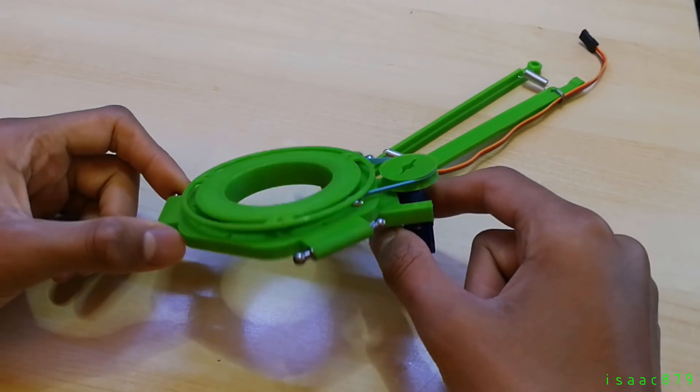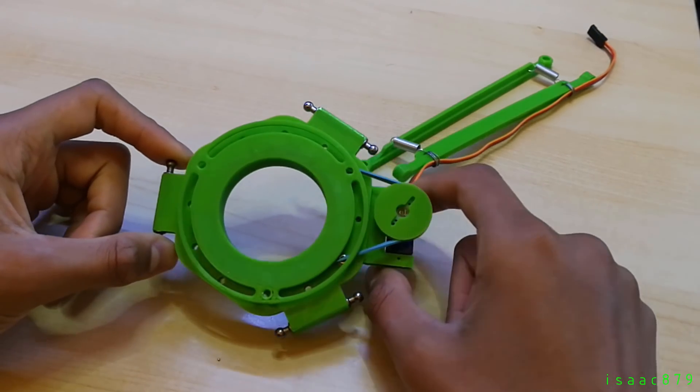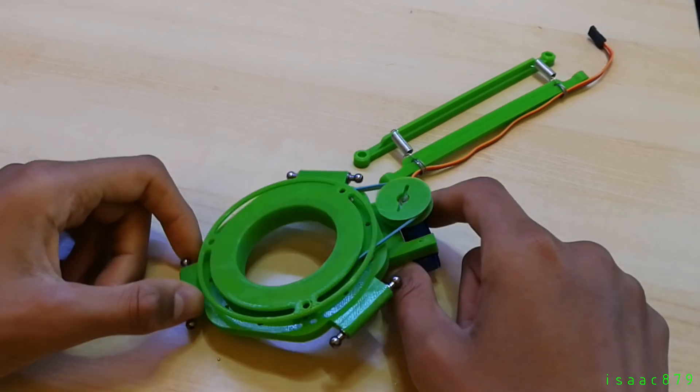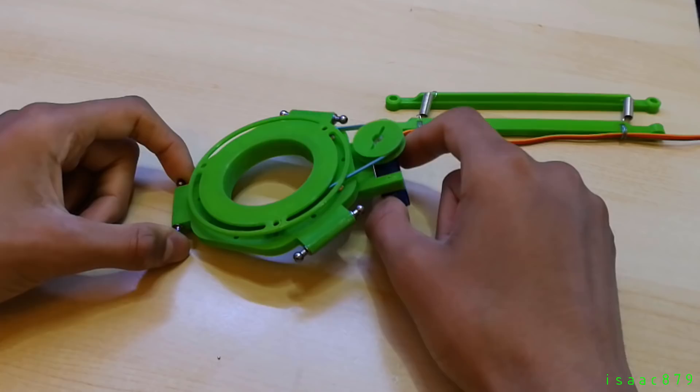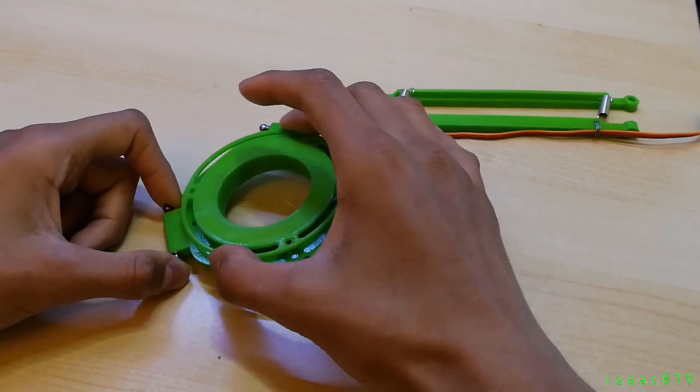For the end effector of the robot, I wanted to make something with continuous rotation because it was more interesting for me. So I ended up creating this design. It uses a micro servo that's been modified for continuous rotation, which drives the rotation through this elastic band.